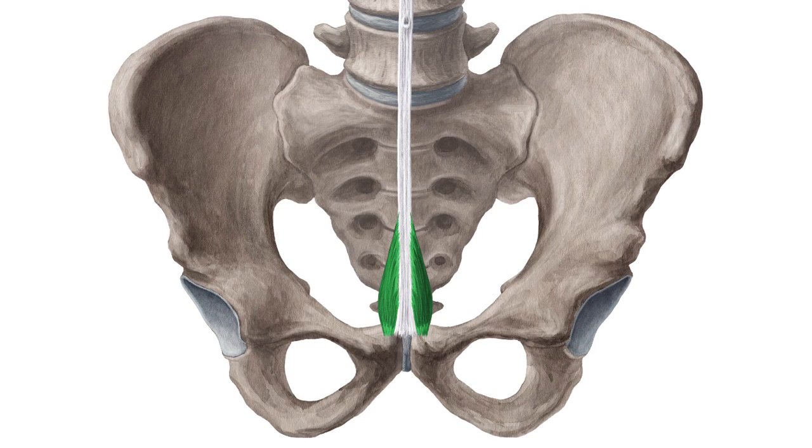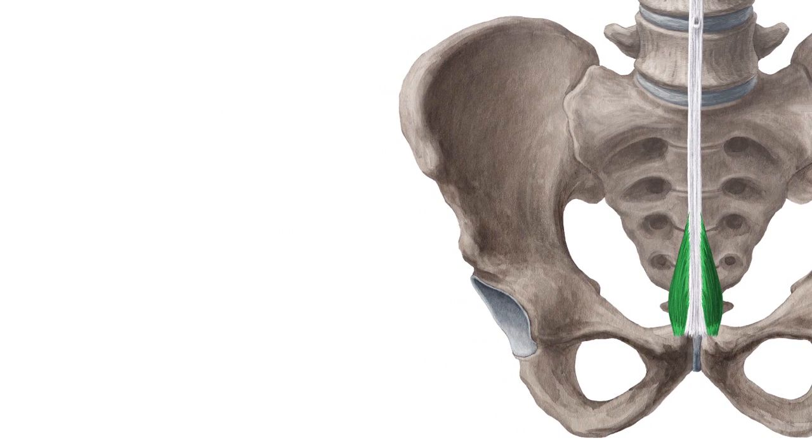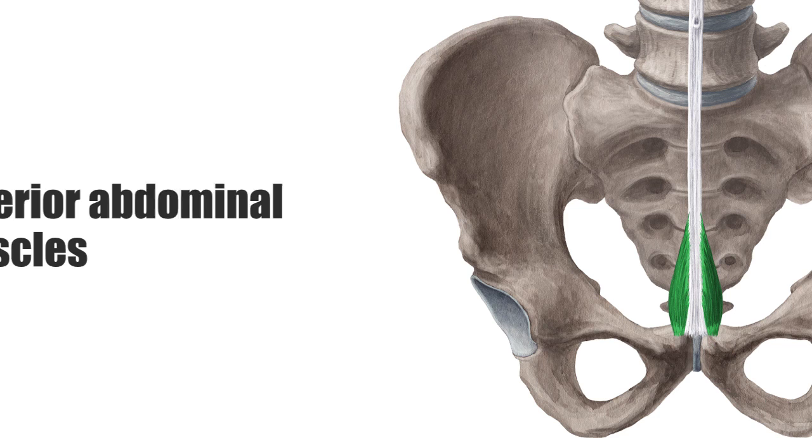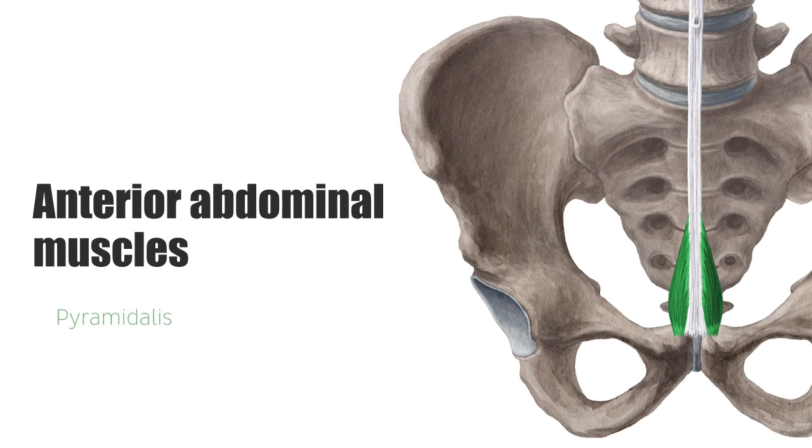The pyramidalis muscle is one of the anterior abdominal muscles which make up part of the abdominal wall musculature. They tense the anterior abdominal wall together with the lateral abdominal muscles. The anterior abdominal muscles consist of the pyramidalis and the rectus abdominis.